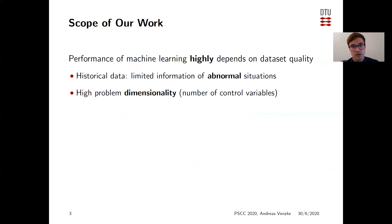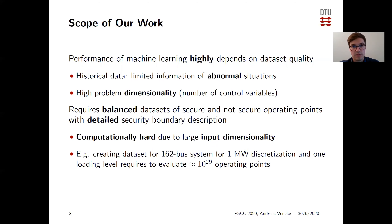The performance of machine learning tools in power systems, however, highly depends on the quality of the data set used. If we rely on historical data, we only have limited information of abnormal situations or not secure operating regions. Also the problem dimensionality is very high — the number of control variables that characterize an operating point can be quite large. To successfully apply machine learning for security assessment, we require balanced data sets of secure and not secure operating points with a detailed security boundary description.